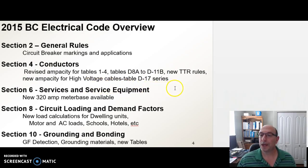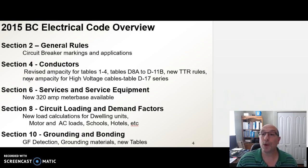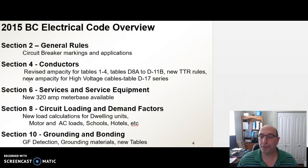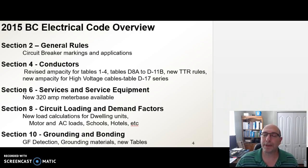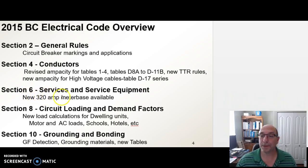We finally have ampacities for high-voltage cables in Section 4. For those installing high-voltage cables underground and wanting to know the ampacities, use the D17 series. Big change in Section 6: the 320-amp meter base is now available. For installations with high demand loads — such as vehicle car chargers, single-family dwellings with multiple suites — where you don't want to install a 400-amp service, you can get away with a 320-amp meter base.